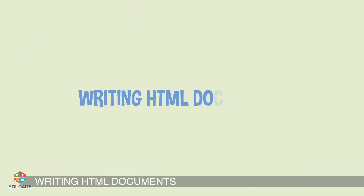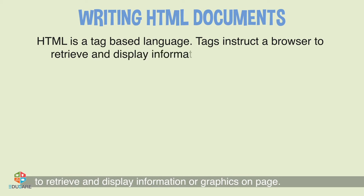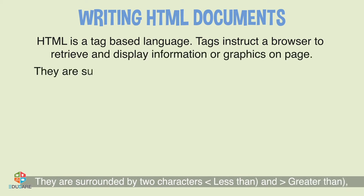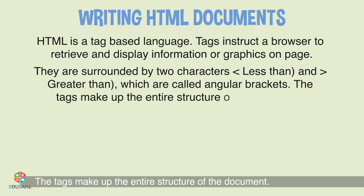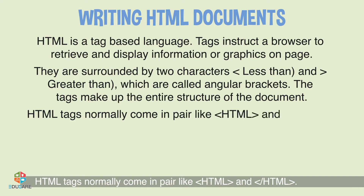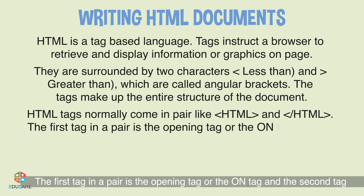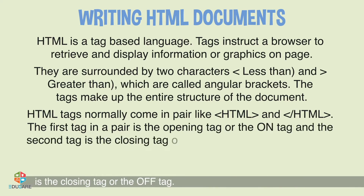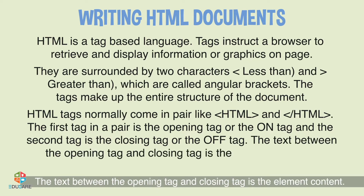Writing HTML Documents: HTML is a tag-based language. Tags instruct a browser to retrieve and display information or graphics on the page. They are surrounded by two characters — less than and greater than — which are called angular brackets. The tags make up the entire structure of the document. HTML tags normally come in pairs. The first tag in a pair is the opening tag or the on tag, and the second tag is the closing tag or the off tag. The text between the opening tag and closing tag is the element content.